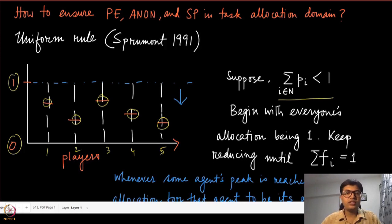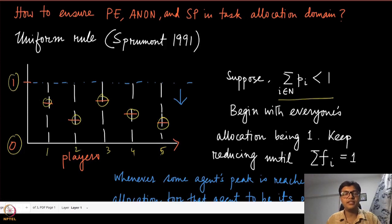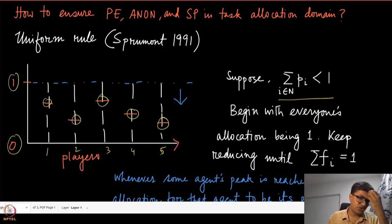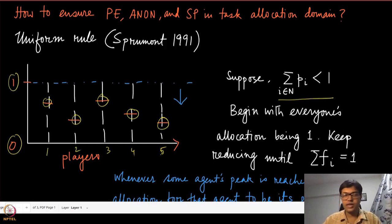The uniform rule starts with an allocation of one for all agents — something like a thread or water level given to all agents. Of course this is not feasible because you have n amounts of work where you can only allocate one unit of work. So the water level keeps coming down uniformly from the top, showing the total allocation decreasing at a uniform rate.